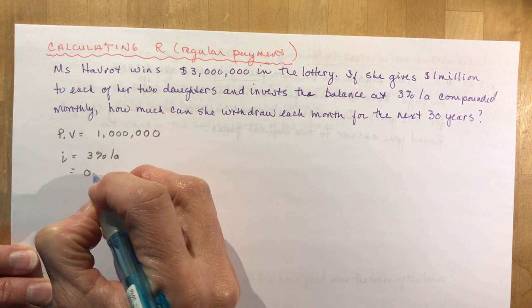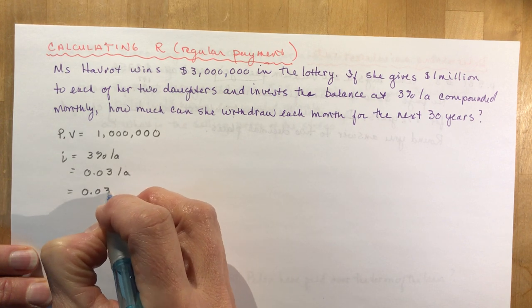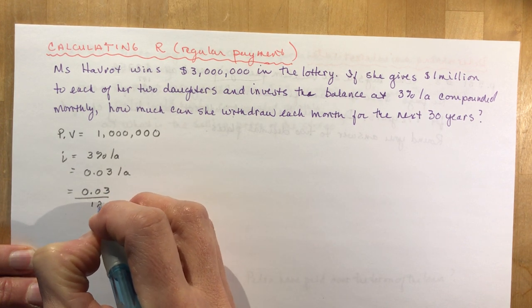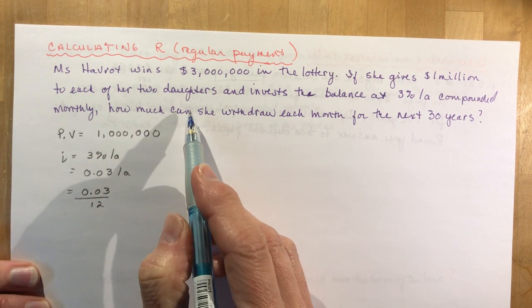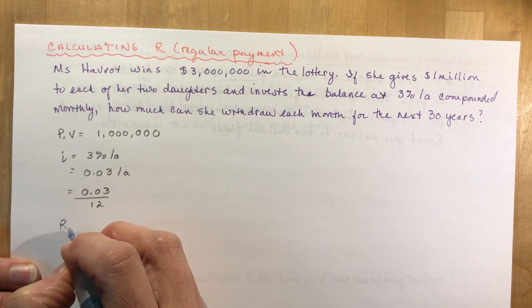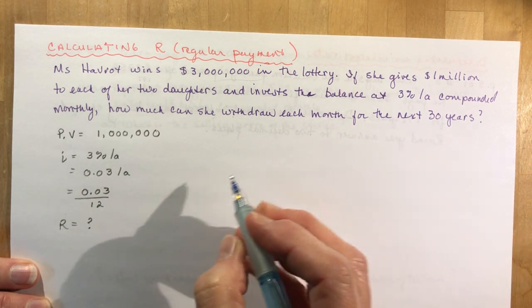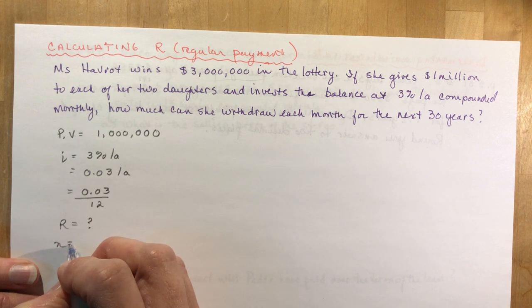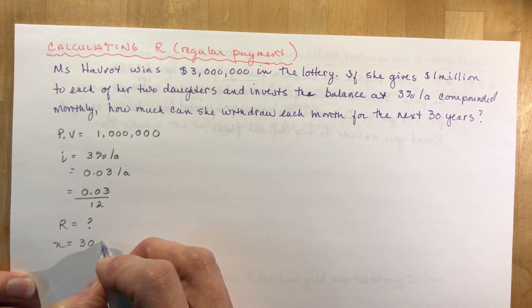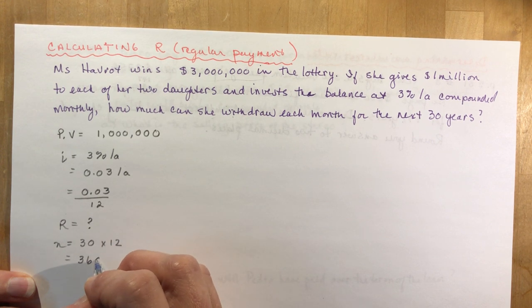I invest the balance at 3% per annum compounded monthly. So the interest rate is 3% per annum, that's 0.03 per annum and monthly 0.03 divided by 12 monthly. How much can she withdraw each month? So I'm trying to solve for R for the next 30 years. So it's the same n this time, I didn't change that up very well. 30 years, 12 months in a year, my n is 360.